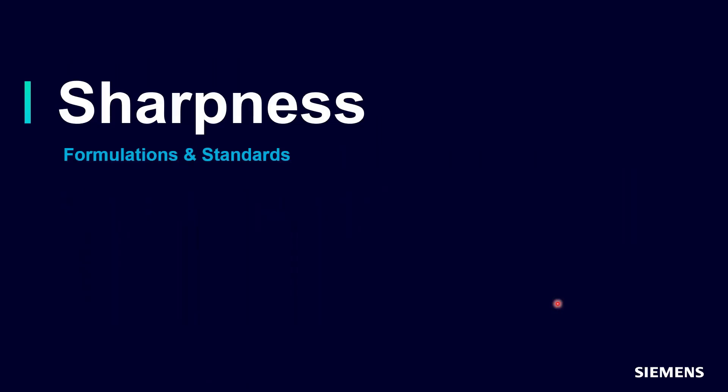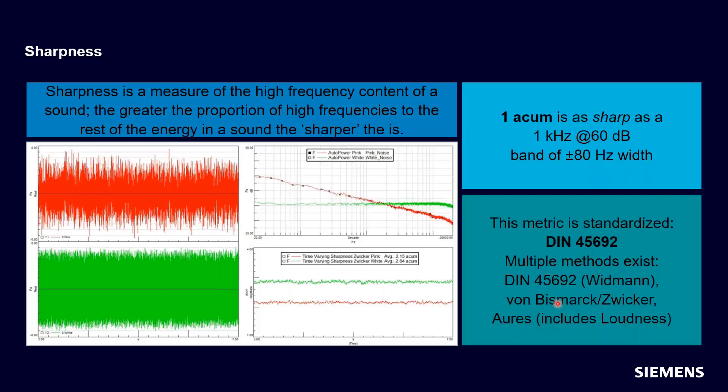Sharpness is a sound quality metric aimed at quantifying the high frequency content in a signal. If I've got two signals, two vacuum cleaners or two cooling fans, and I want to know which one has more high frequency content, if I calculate sharpness for both of them, I will calculate a difference if there is indeed a difference in the amount of high frequency content. The more high frequency content, the sharper that sound is said to be.